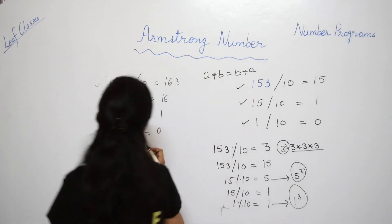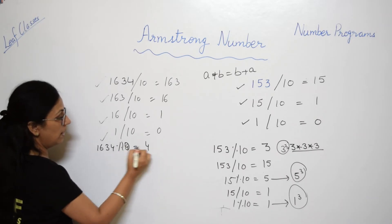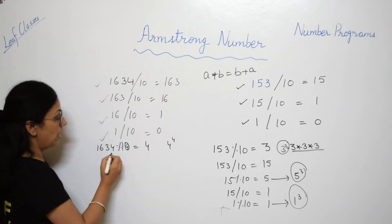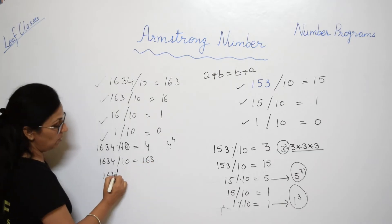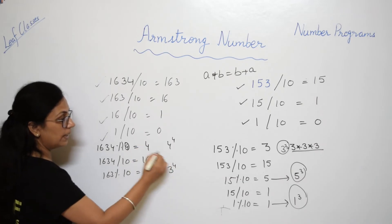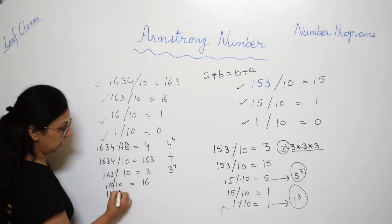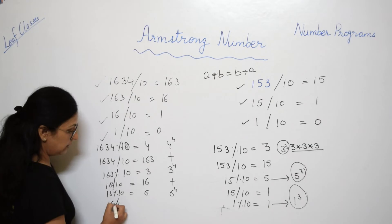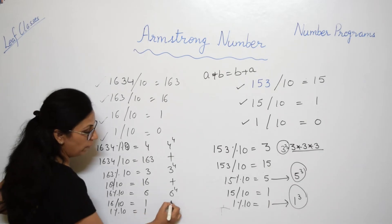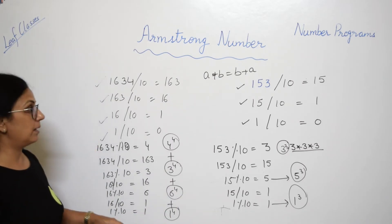For the four-digit number 1634: n = 4. We extract: 1634 modulus 10 = 4, calculate 4^4; then 1634 / 10 = 163, 163 modulus 10 = 3, calculate 3^4; then 163 / 10 = 16, 16 modulus 10 = 6, calculate 6^4; then 16 / 10 = 1, 1 modulus 10 = 1, calculate 1^4. We add all these power values and check whether the result equals the original number.